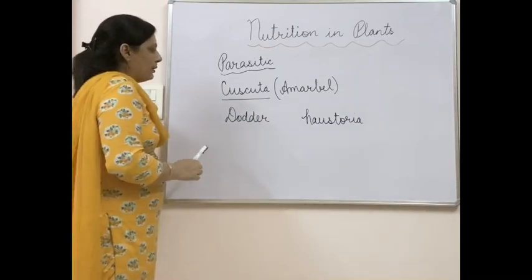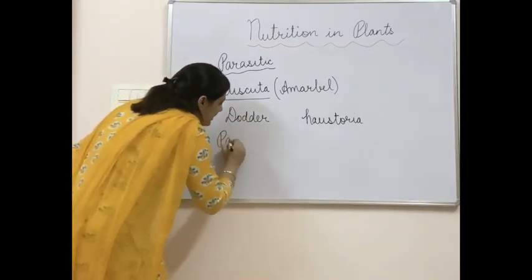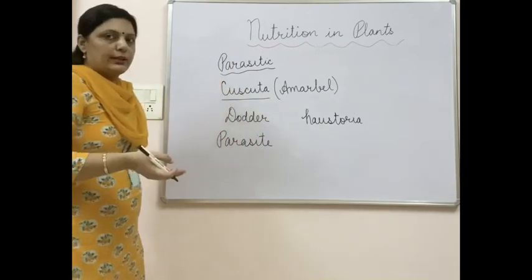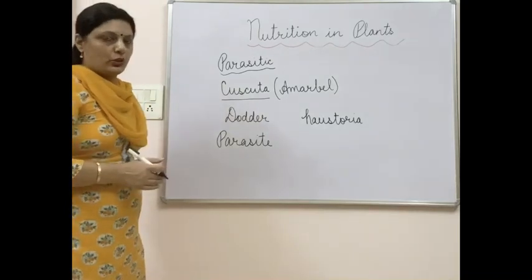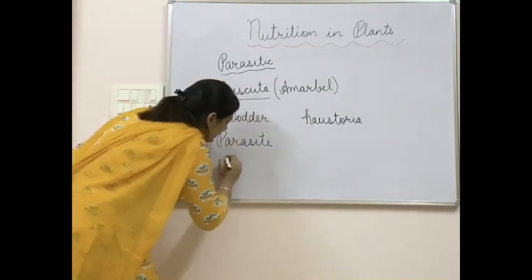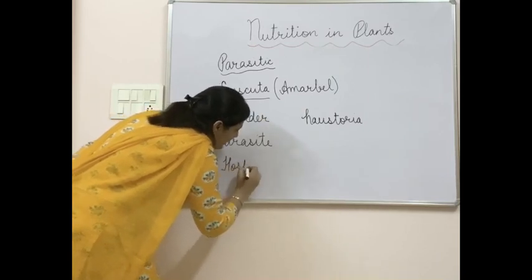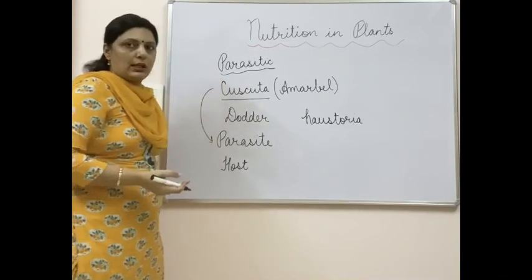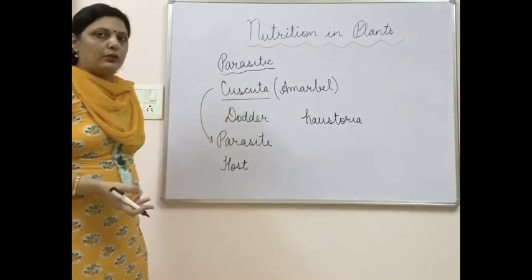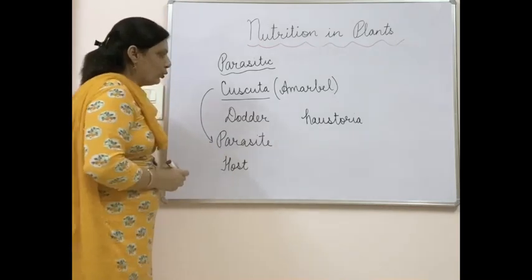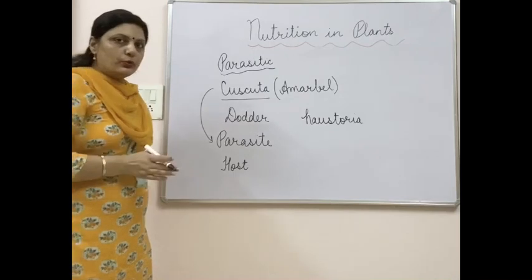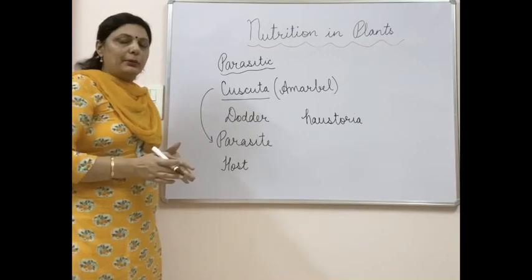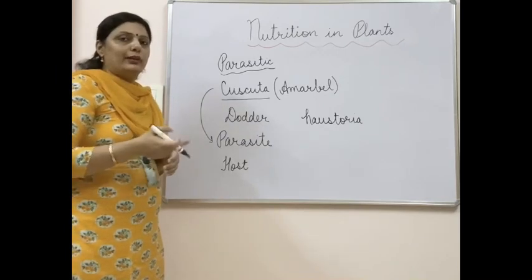These haustoria roots enter the plant on which the Cuscuta is climbing and suck nutrients from it. So Cuscuta is called a parasite — it takes nutrients from another organism and harms that organism. The organism from which the parasite takes nutrients is called the host. Cuscuta sucks all nutrients from the host plant, depriving it, and ultimately the host may even die.